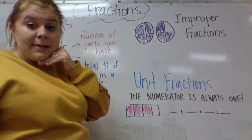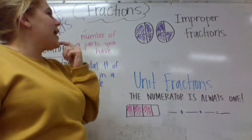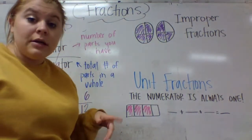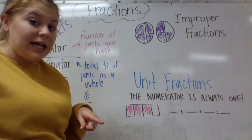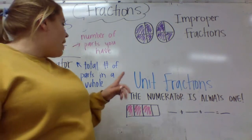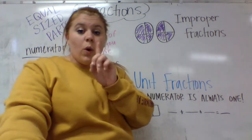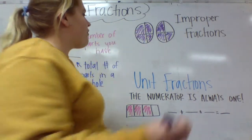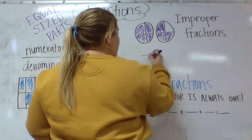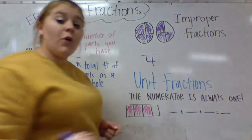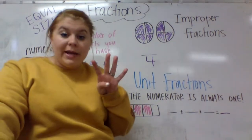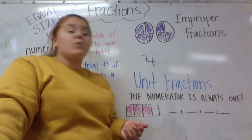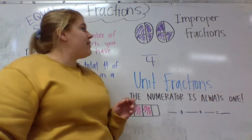We'd be really tempted when looking for our denominator to count all 8 pieces and say our denominator is 8. But it's not, because our denominator is the total number of pieces in one whole. So if I count 1, 2, 3, 4 — my denominator is 4, because it only takes 4 pieces to make one whole. 8 pieces would make 2 wholes. So my denominator can't be 8; it has to be 4.